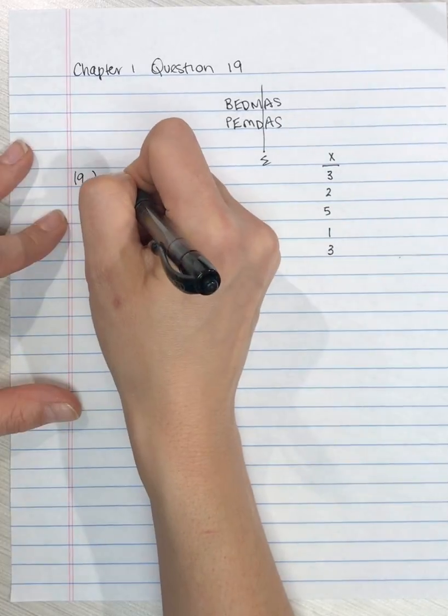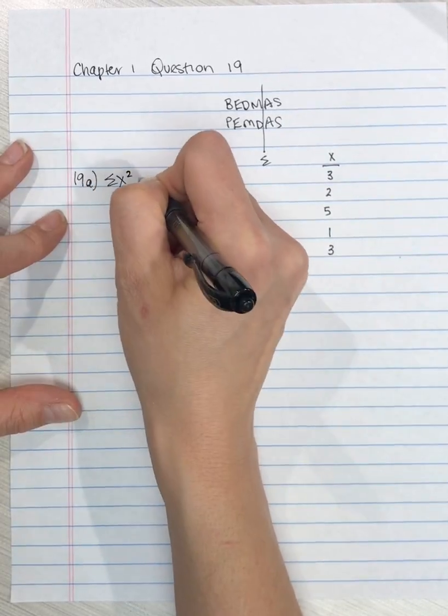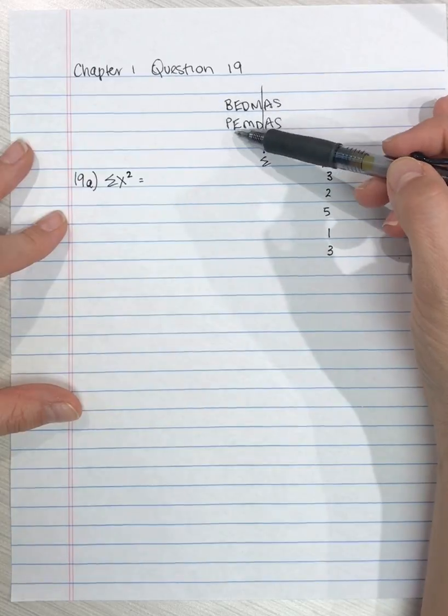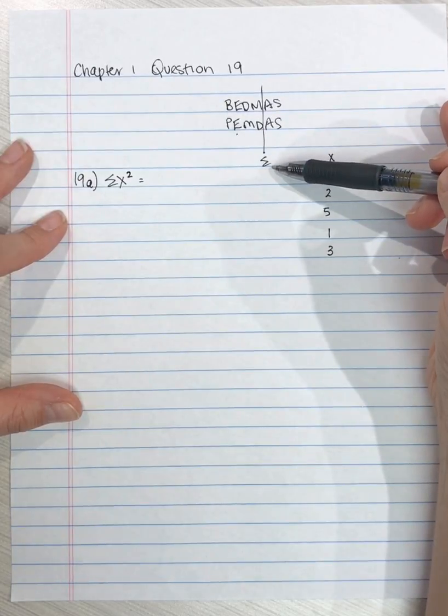What we want to do is the sum of X squared. So exponents happen before the summation notation.